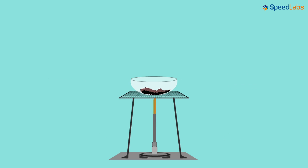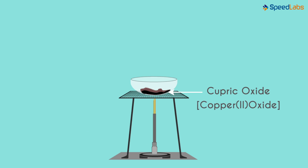It's because the surface of the copper powder gets coated with black cupric oxide, also written as Cu₂O. Copper reacts with the oxygen in the air to form cupric oxide, which is black in colour, and hence the surface turns black.